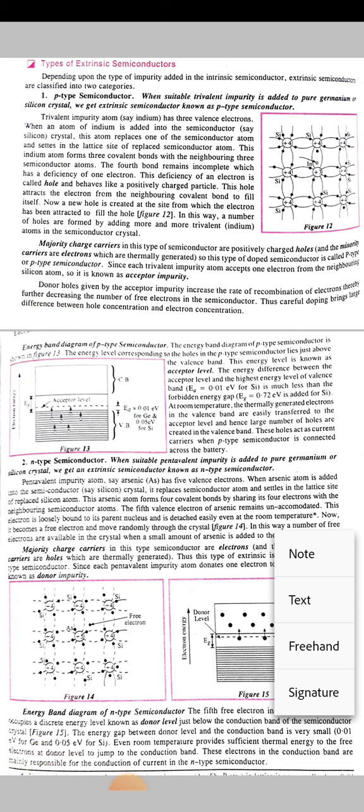If we discuss the energy band diagram for p-type semiconductors, the diagram shows that the energy level of holes in the p-type semiconductor lies just above the valence band.